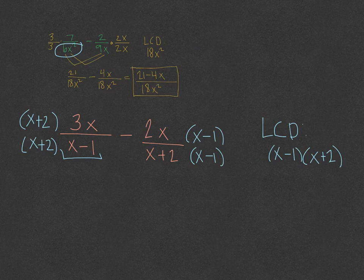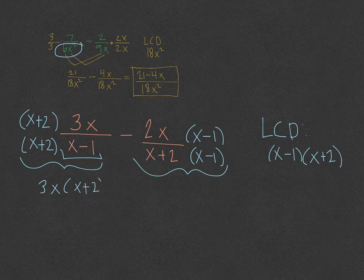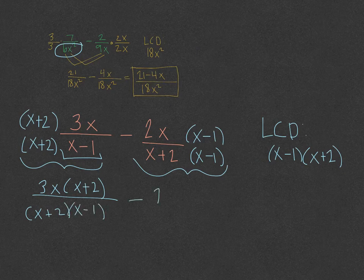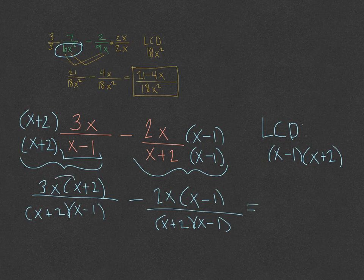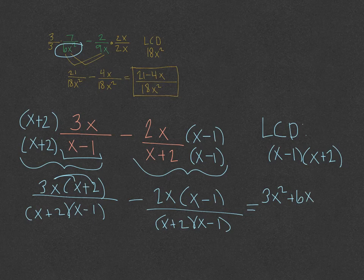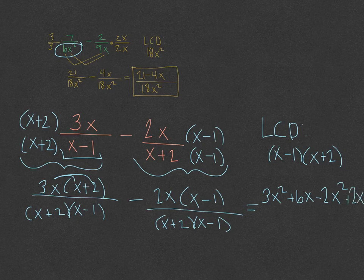Going through and simplifying each of these fractions: it would be 3x times x plus 2 all over x plus 2 times x minus 1, and then minus 2x times x minus 1 over x plus 2 times x minus 1. Now we can add the two fractions together. Distributing: 3x times x is 3x squared, 3x times 2 is plus 6x. Then minus 2x times x is minus 2x squared, and negative 2x times negative 1 is plus 2x. All over the denominator x plus 2 times x minus 1.